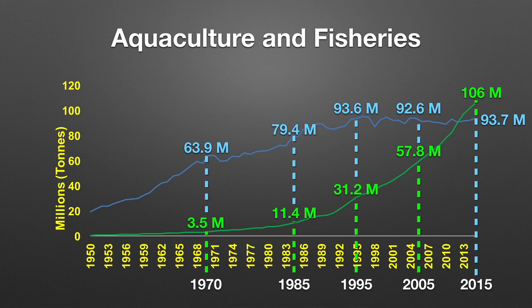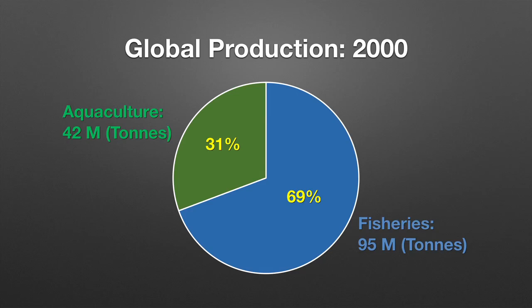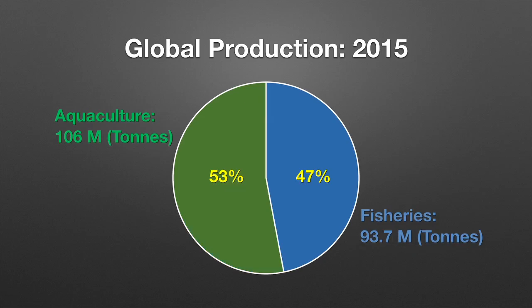In the year 2000, aquaculture production was 42 million metric tons — about 31 percent of total global production — whereas fisheries represented about 95 million metric tons. In 2015, aquaculture has reached 106 million metric tons and now surpasses fisheries, which has remained stable at about 90 million metric tons.